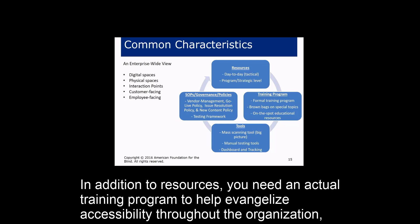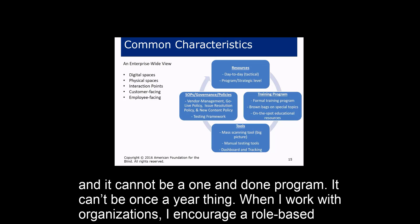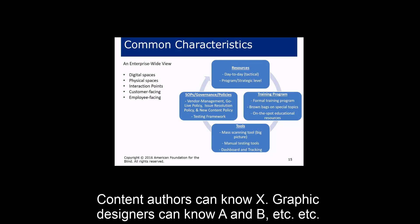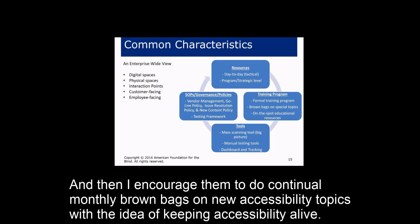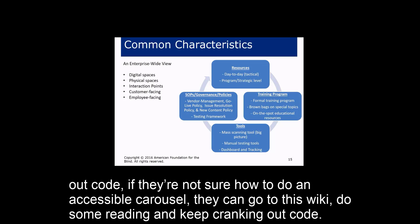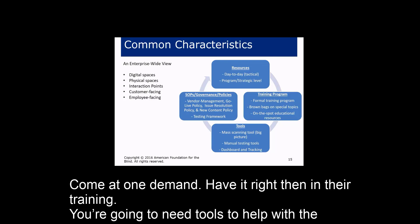In addition to resources, you need an actual training program to evangelize accessibility throughout the organization — not a one-and-done or once-a-year event. A role-based training curriculum works well, so developers learn their accessibility responsibilities, content authors learn theirs, graphic designers learn theirs, et cetera. Ongoing monthly brownbags on new accessibility topics help keep accessibility alive. It's also helpful to develop an on-demand resource like a wiki, so a developer unsure how to build an accessible carousel can look it up and keep coding without interruption.